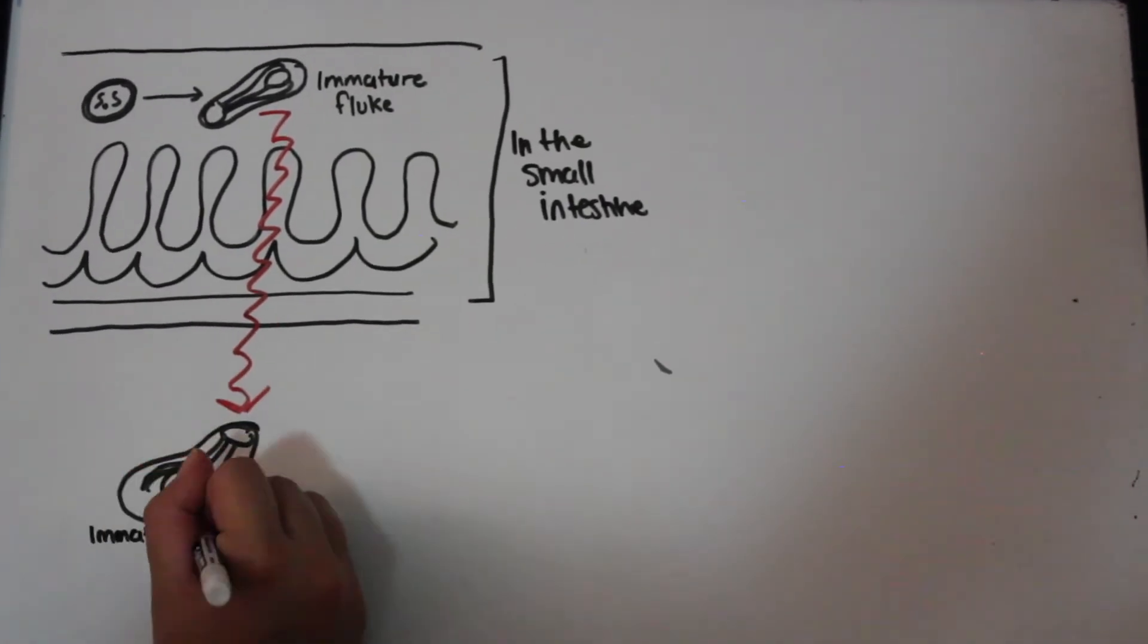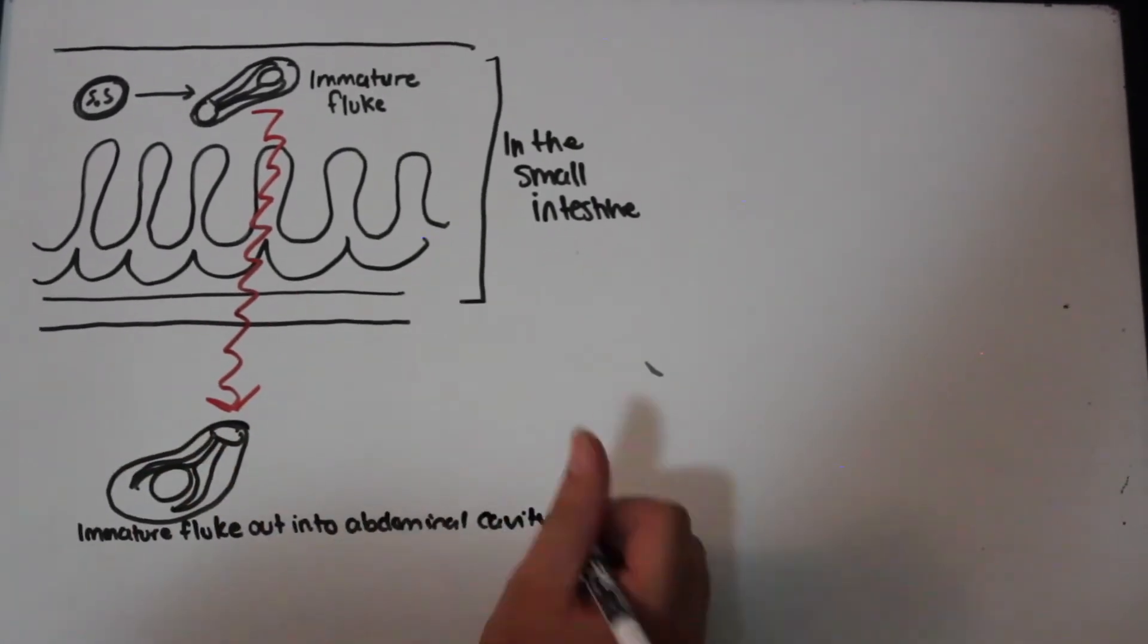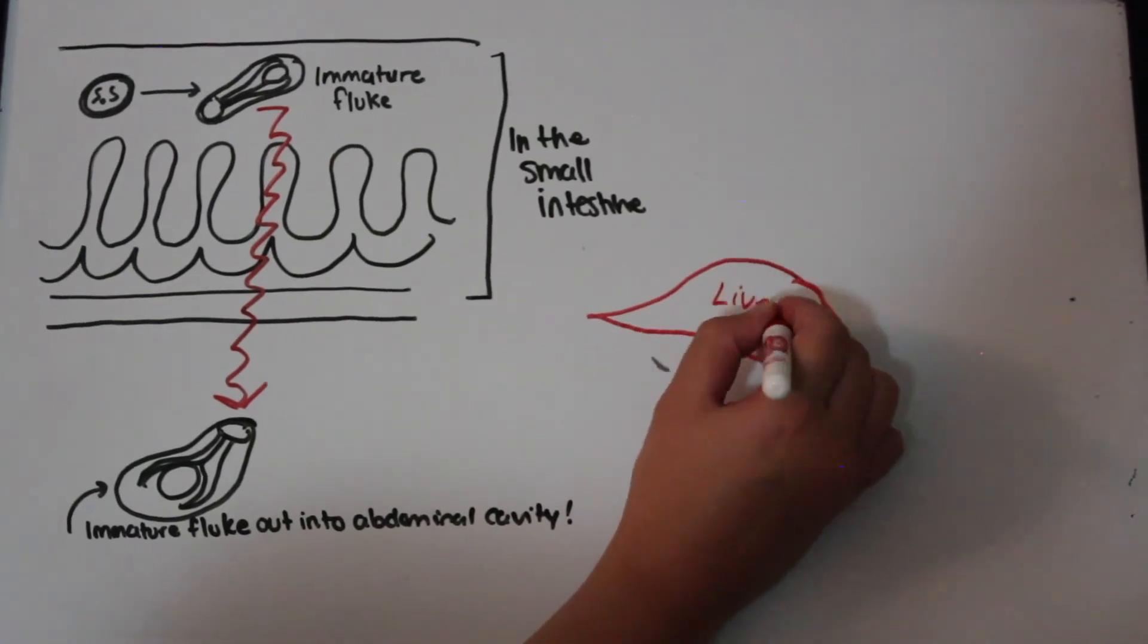The immature fluke makes its way through the intestine wall into the abdominal cavity and proceeds to the liver.